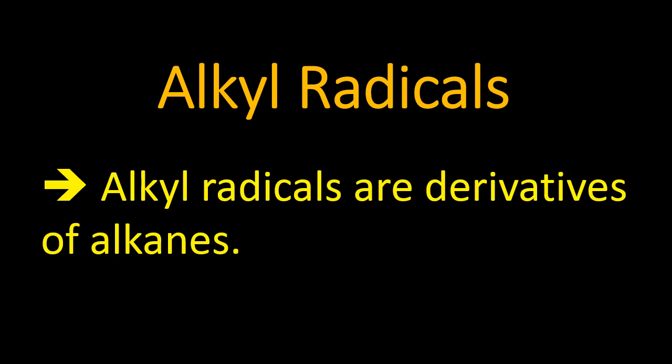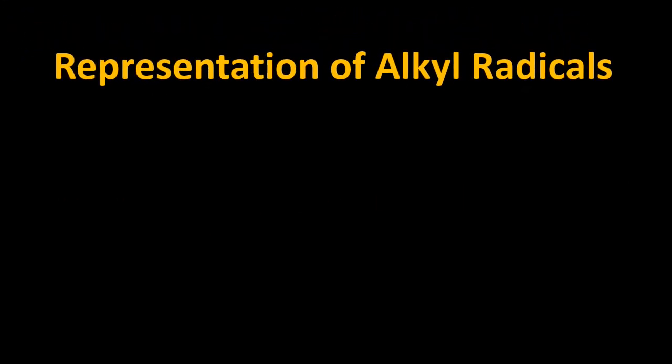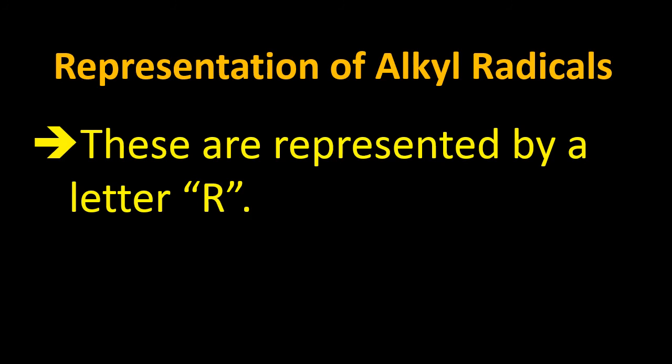The word 'derivative' is super important — it means that alkyl radicals are derived from alkanes. The base of alkyl radicals are alkanes, but there will be some change that takes place. Formation of alkyl radicals: they are formed by the removal of one hydrogen atom from an alkane. Whenever one hydrogen atom is removed from an alkane, it becomes an alkyl radical.